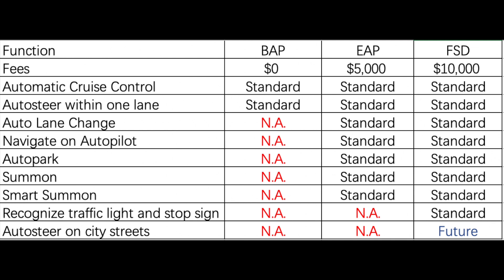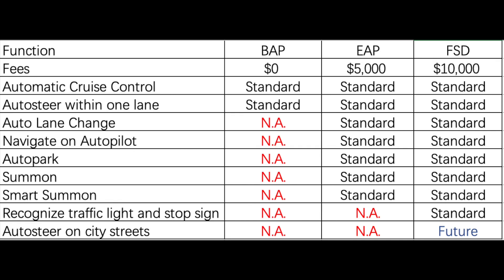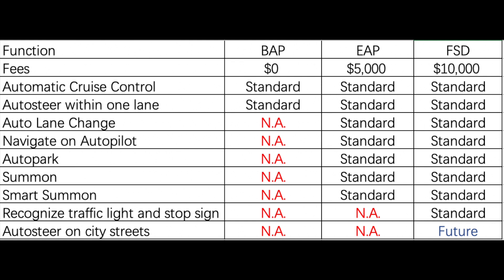EAP includes auto lane change — while driving on the highway, it will position your car in the optimal lane to prepare for merges and exits while overtaking slow cars. It also includes navigate on autopilot, which helps you on the highway from on-ramp to off-ramp, with automatic lane changes, traffic-aware cruise control with complete stopping and re-engagement, auto steer, and overtaking slow cars. It also comes with auto park, allowing you to park in both parallel and perpendicular spaces, as well as summon and smart summon. Recognizing traffic lights and stop signs is not available for EAP.